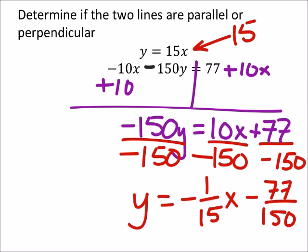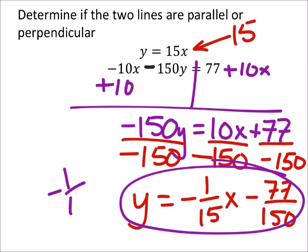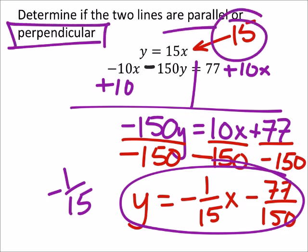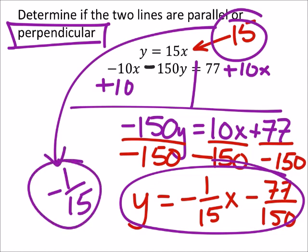What is the slope for this equation? Negative 1/15. So the slopes are not the same, so they can't be parallel. Perpendicular. They are perpendicular, because the opposite reciprocal of 15 is negative 1/15.